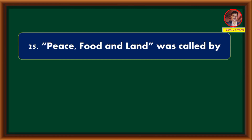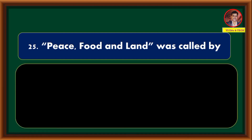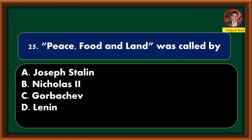Peace, food and land was called for by — Joseph Stalin, Nicholas 2nd, Gorbachev, Lenin. Correct answer is option D: Lenin.